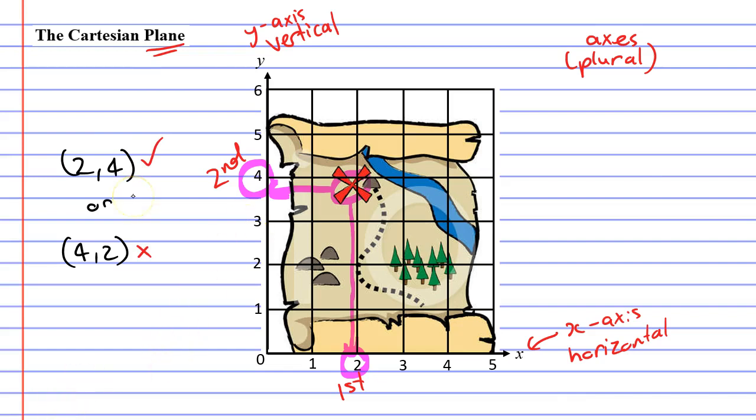We say that when we write coordinates, we do it in the order X comma Y, since X stands for the horizontal axis and Y stands for the vertical axis.